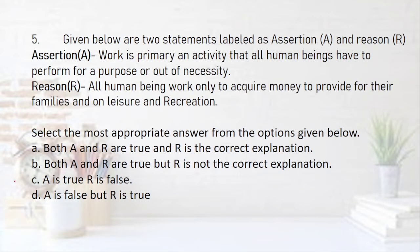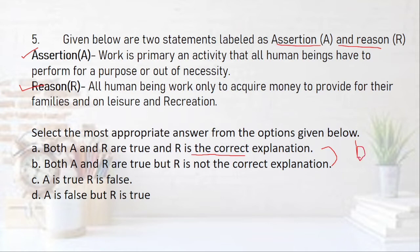Now we come to assertion based questions where you are given two statements labeled as assertion and reason. You have to find whether the reason is appropriate to the assertion. Option A: both A and R are true and R is the correct explanation. There is often confusion between options A and B, so you have to identify whether R is the correct explanation. A useful trick: look for the conjunction 'because' — if you can connect the two sentences using 'because,' then the reason is correct for the assertion. If both are true but R does not fit using such a conjunction, it is not the correct explanation and you go with option B. Options C and D are simpler: A is true and R is false, or A is false and R is true.